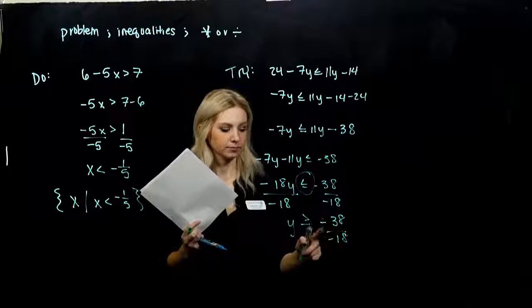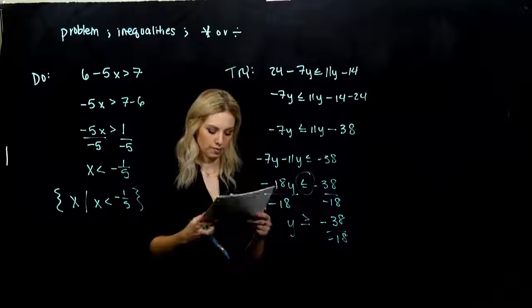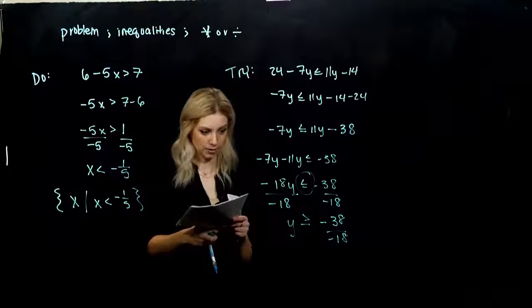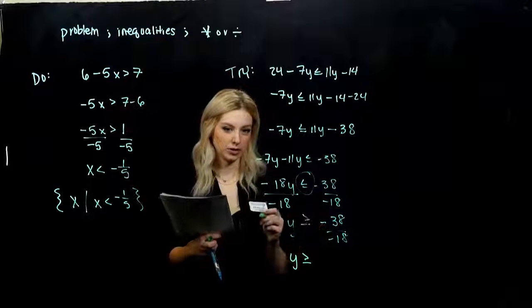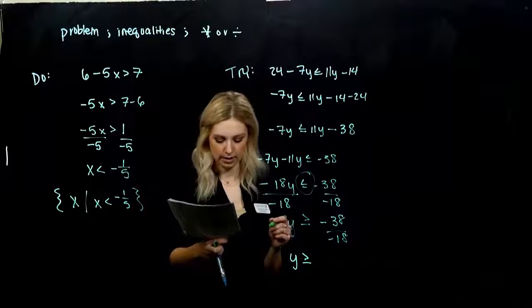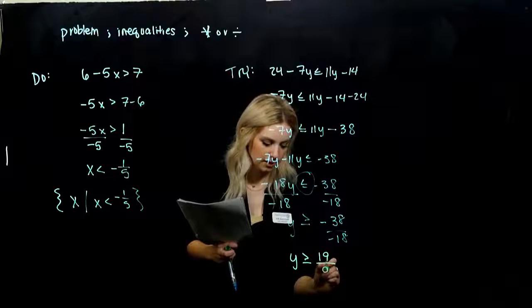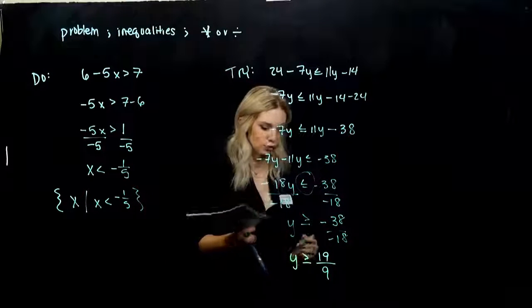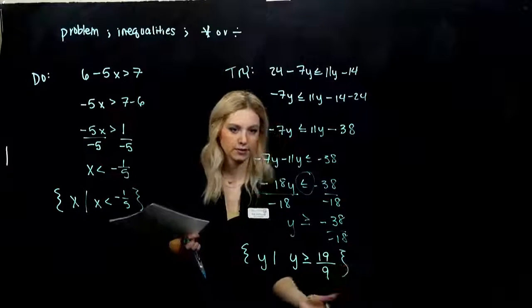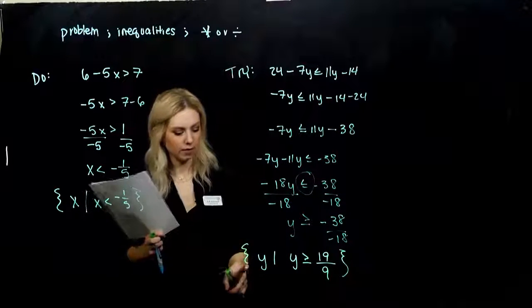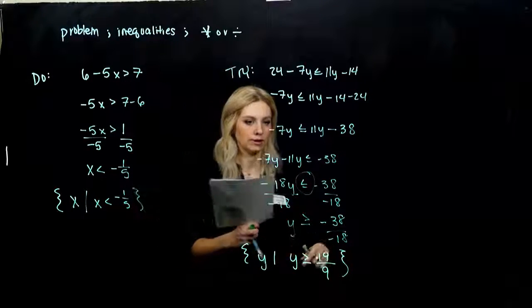Is there anything in common between those two that we can take out of both of them? They're both even, so a factor of 2. 38 divided by 2 gives us 19, and 18 divided by 2 gives me 9. So in set notation, the set of all y's such that y is greater than or equal to 19 over 9. We always want to have it in the most simplified form possible.